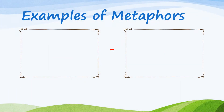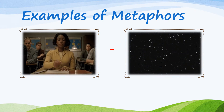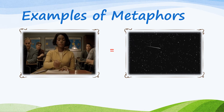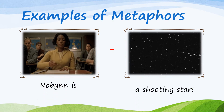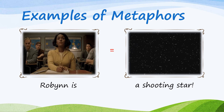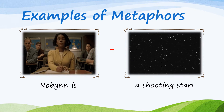Let's take a look at these photos. On the left, we have Robin, and on the right, there's a shooting star. Now look carefully in the middle — there's an equal sign. This suggests that Robin is equal to a shooting star. Let's see how this looks in writing: Robin is a shooting star. Now, is Robin really a shooting star? Not literally, but in this setting, this metaphor suggests that she is excelling academically.